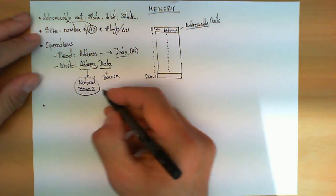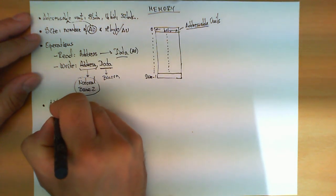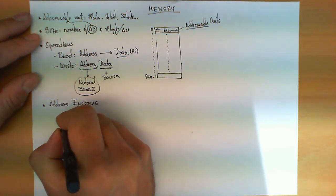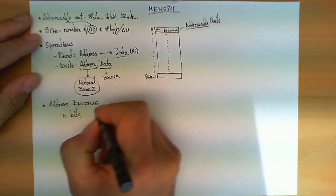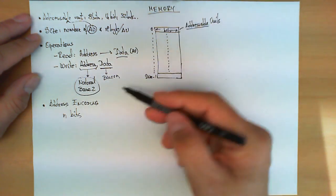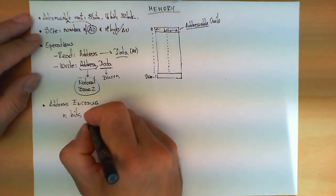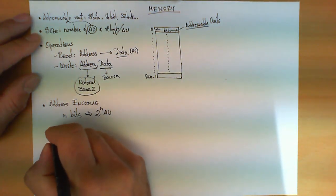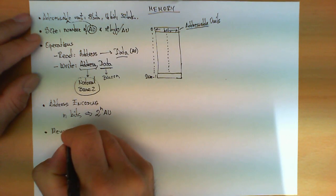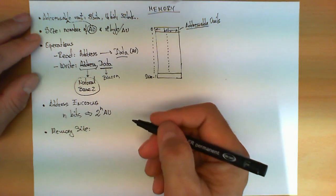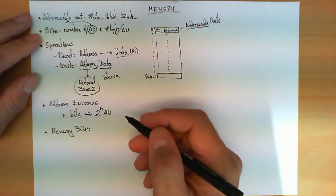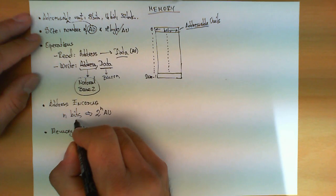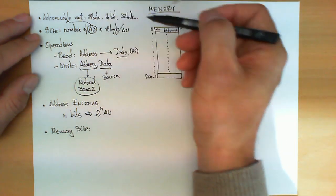So, once we know that a memory address is encoded with n bits, if a chip has the memory addresses encoded as n bits, then what we can conclude is that we have two to the n maximum addressable units. And therefore, the memory size, in terms of the information that is allowed to store, is two to the n number of bits encoded in the address times the size of the addressable units.